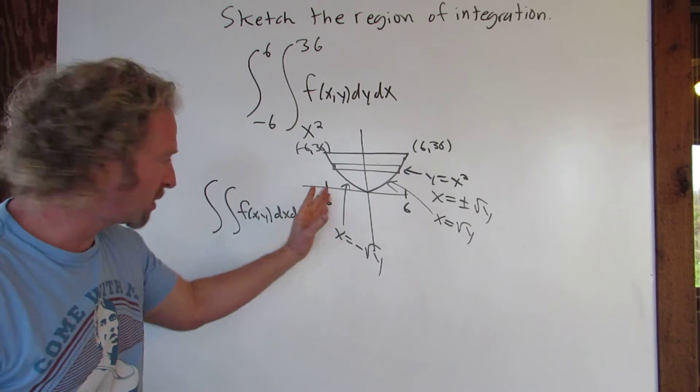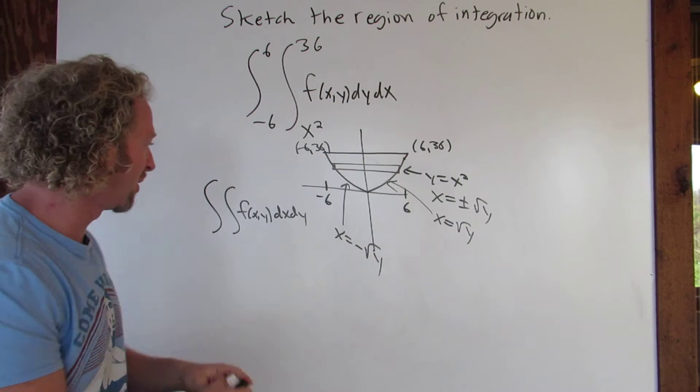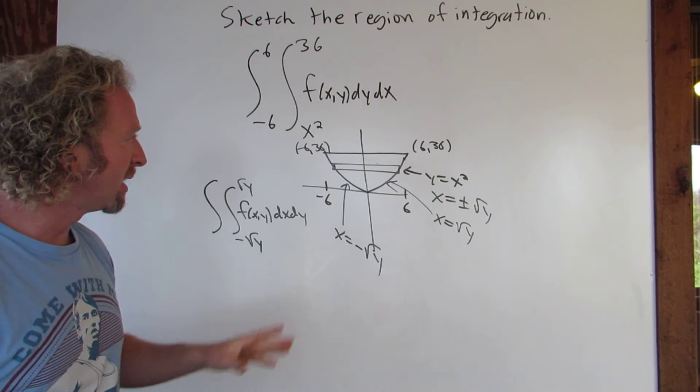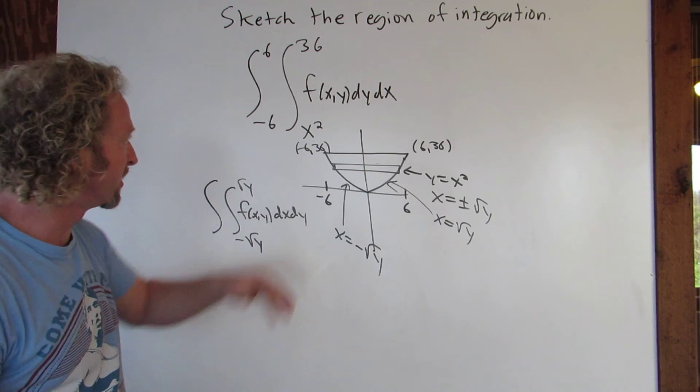So we integrate with respect to x. We're going from negative square root of y to square root of y. And then now we're going with respect to y, so that would be from 0 to 36.